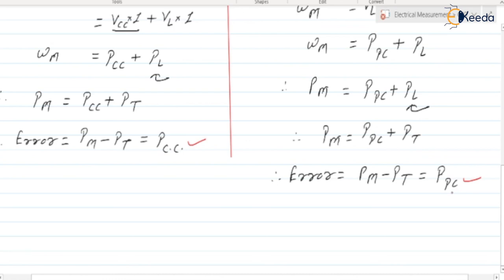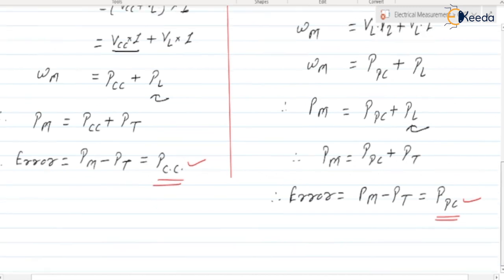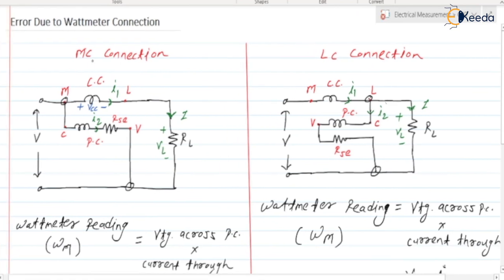In summary: in the LC connection the error is due to the power consumed by the potential coil; in the MC connection the error is due to the power consumed by the current coil. These questions have been asked in previous GATE examinations. In both cases, the error is due to the coil connected on the load side — in MC connection the current coil is on the load side, and in LC connection the potential coil is on the load side. This covers the error due to wattmeter connection type. Thank you.